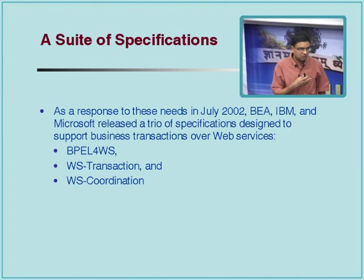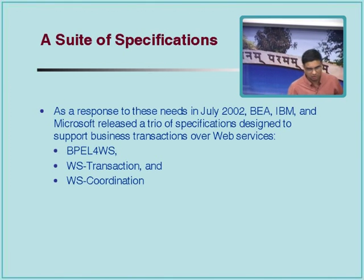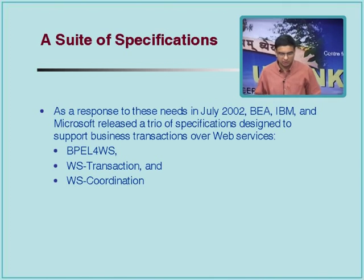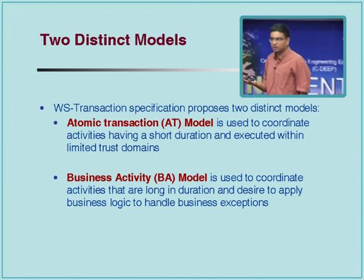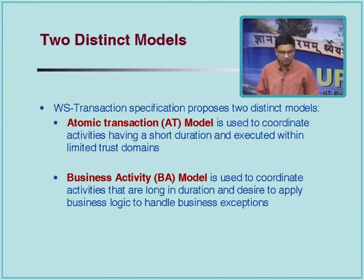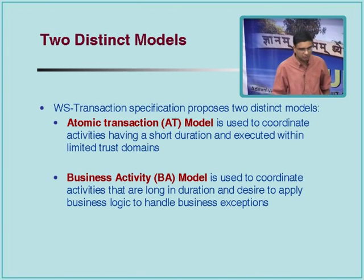How transactions work is by holding on to certain resources to ensure other people cannot modify them when this transaction is alive. If transaction one starts and starts modifying a table, it will typically lock some rows or the table itself. In the case of long-lived transactions, you can't lock everything and keep it — if the transaction is going to take several days, there is no point. Which is why we have this notion of WS-Transactions. It is actually a suite of specifications because it works along with BPEL itself. Two transactional models are specified: one for short-lived and one for long-lived — the business activity model.